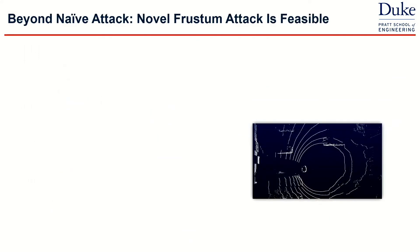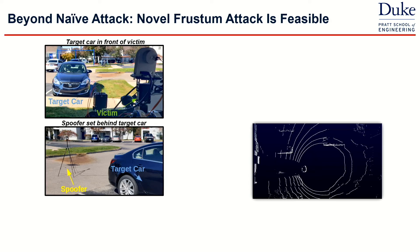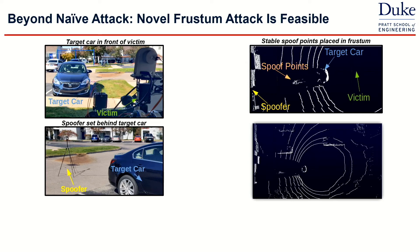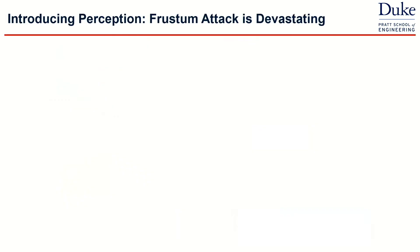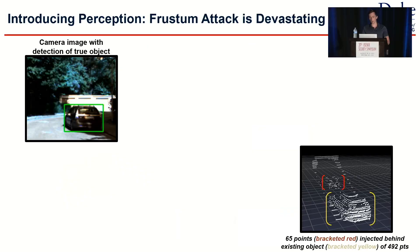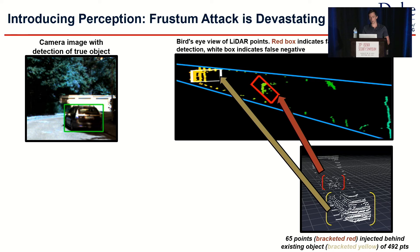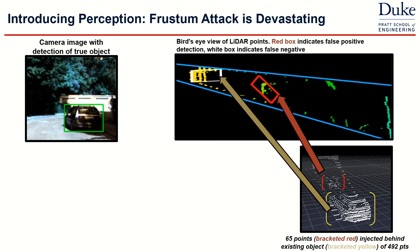Our first experiment was to show that the frustum attack is feasible in a physical sense. We created a physical experiment where we placed a spoofing device behind a target car and in front of a victim, and we were stably able to spoof points in the frustum — you can see our spoof point cluster behind the target car. A short video shows that in certain cases, the frustum attack is feasible without any additional knowledge; the attacker has no knowledge of anything about the camera. Once we introduce perception, we find the frustum attack is particularly devastating, yielding consistently false positive detections behind the target car even with a camera-LiDAR fusion algorithm.